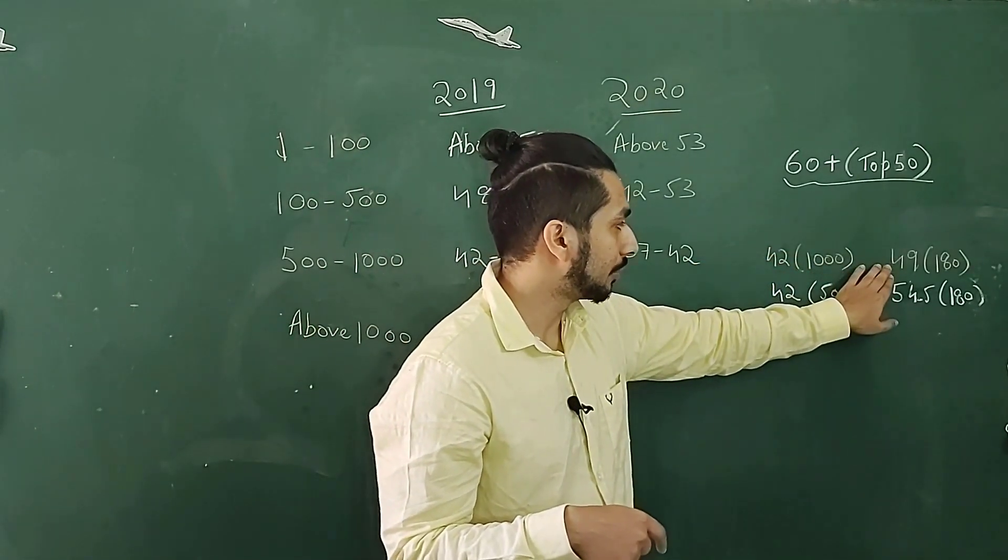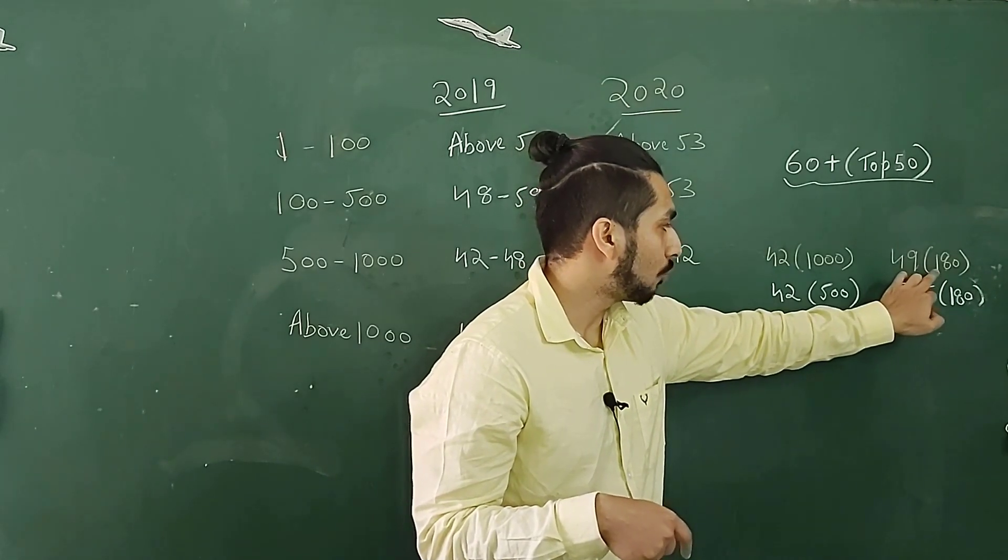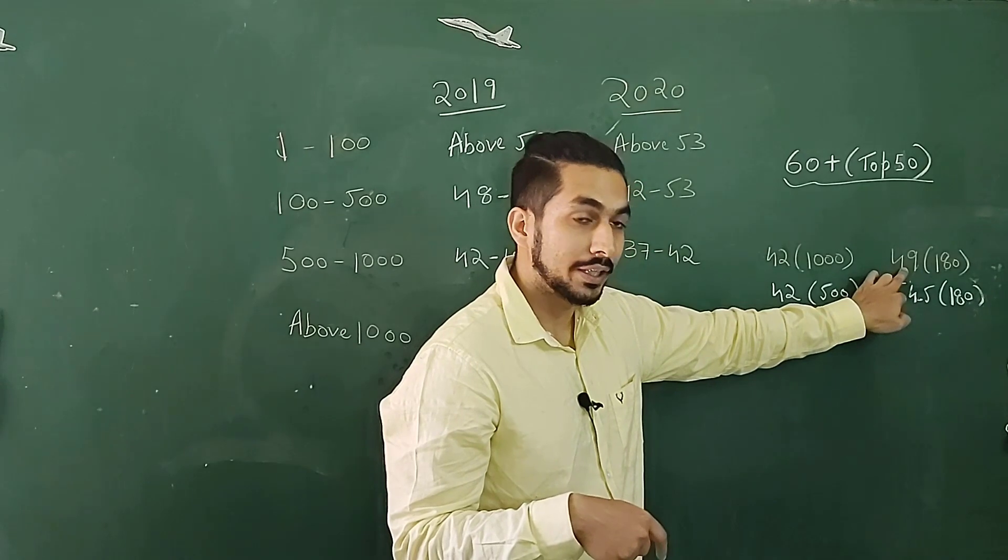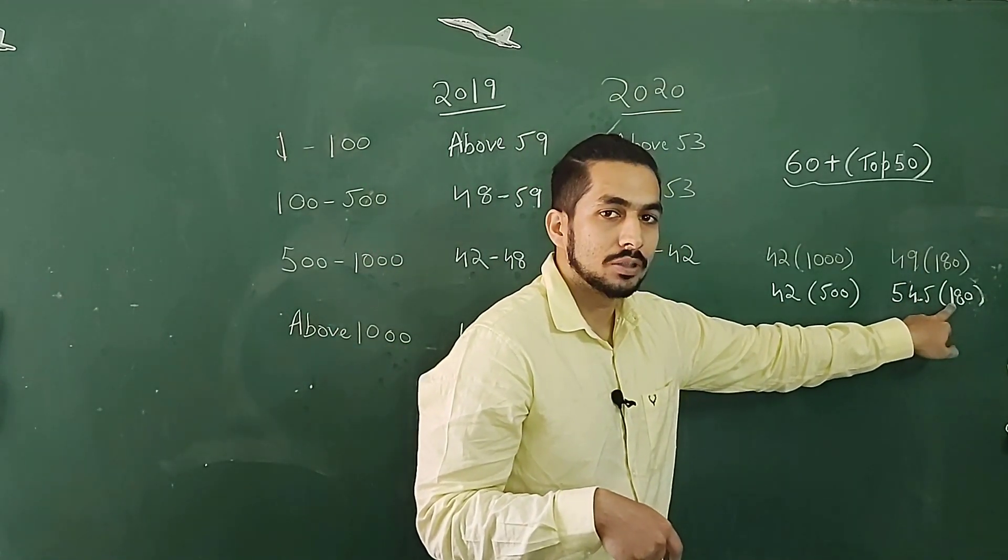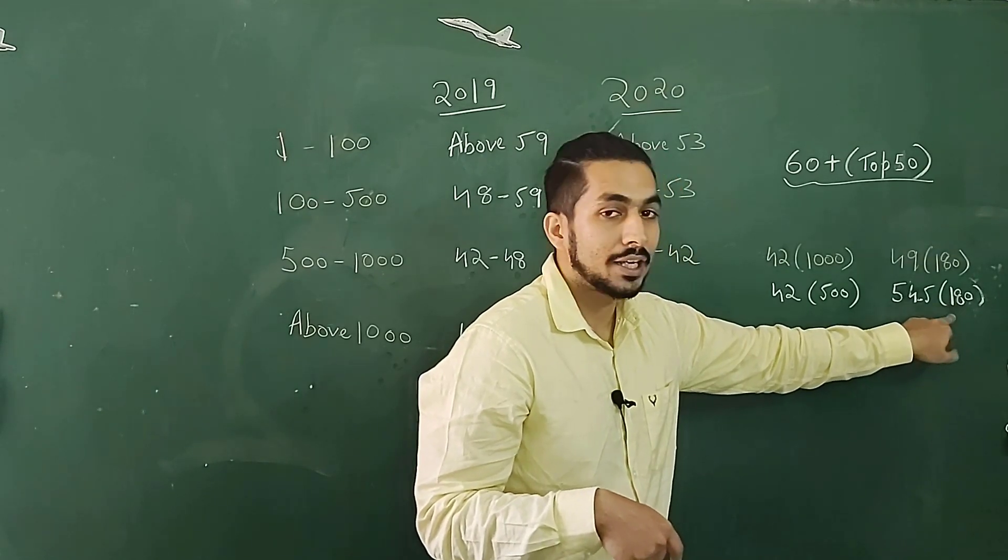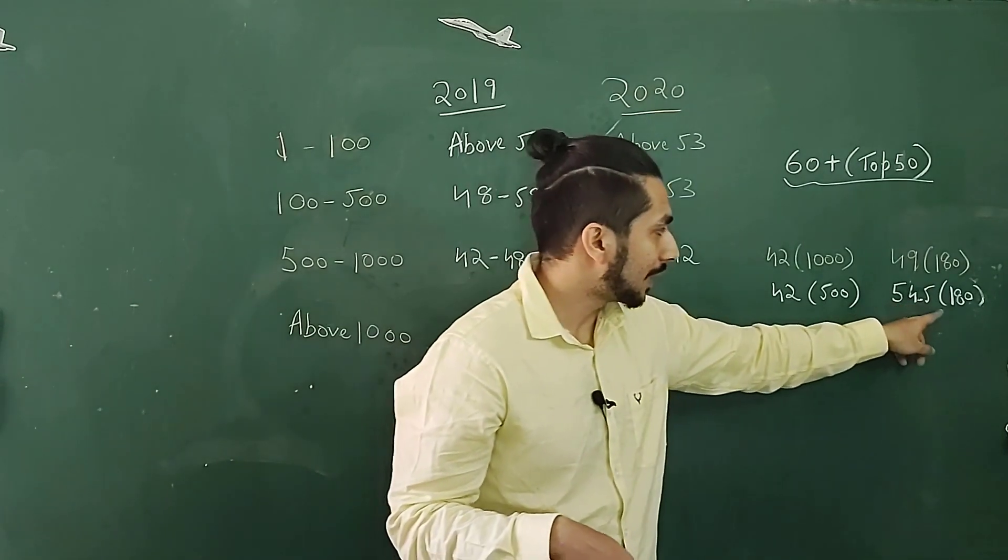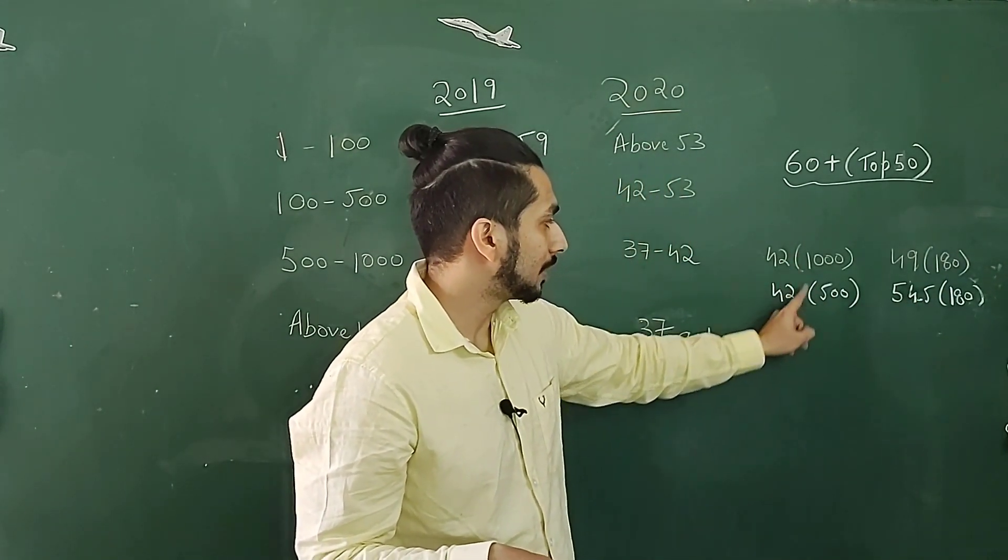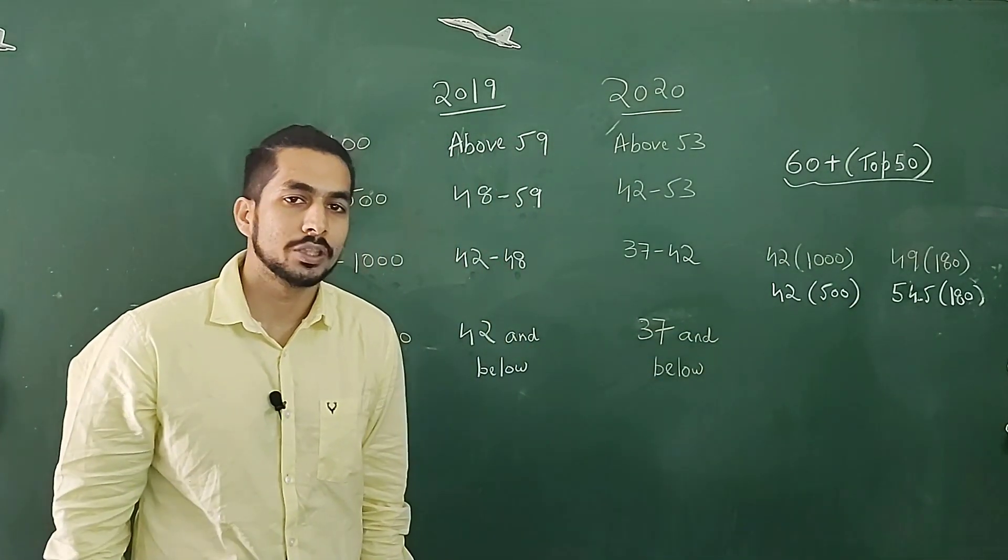And then let's look over here. If you want the same rank, that is if you want a rank of 180, then you need to score 49 and if you score 54.5, then you get a rank of 180 in the year 2019. So you can see the same rank, but there is a difference of 5 marks and over here you have the same score, but there is a difference of 500 ranks. So that is how much it can vary depending upon the cutoff.